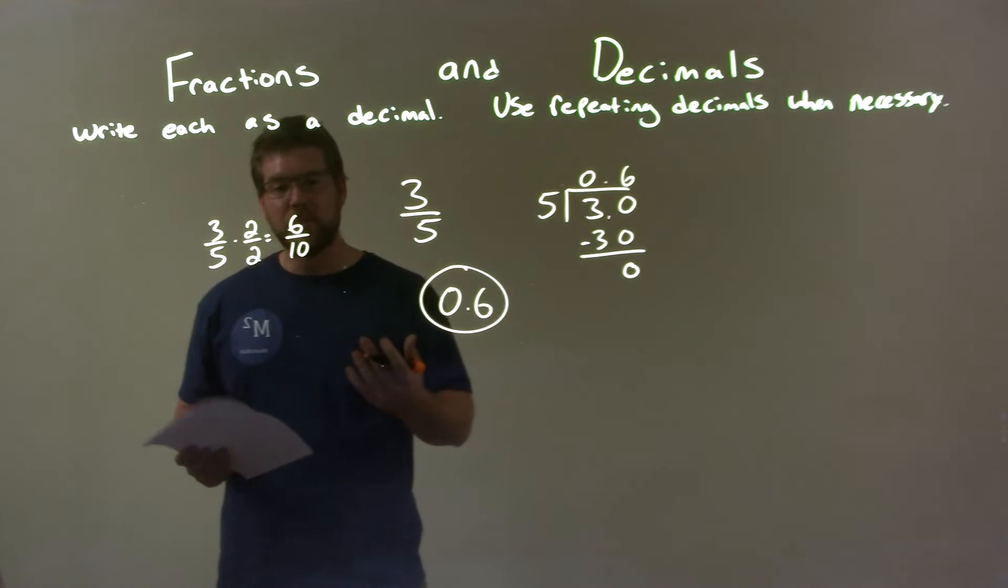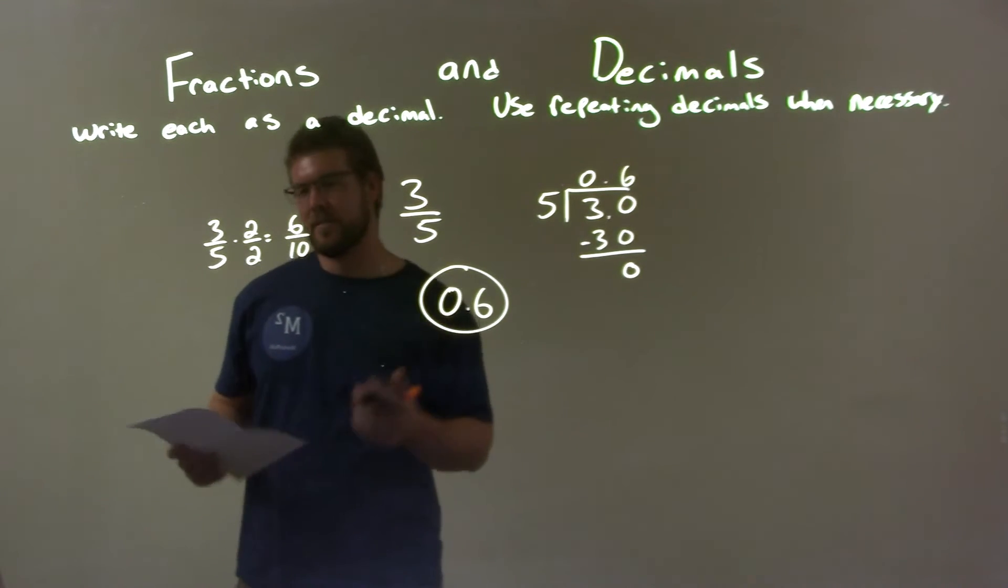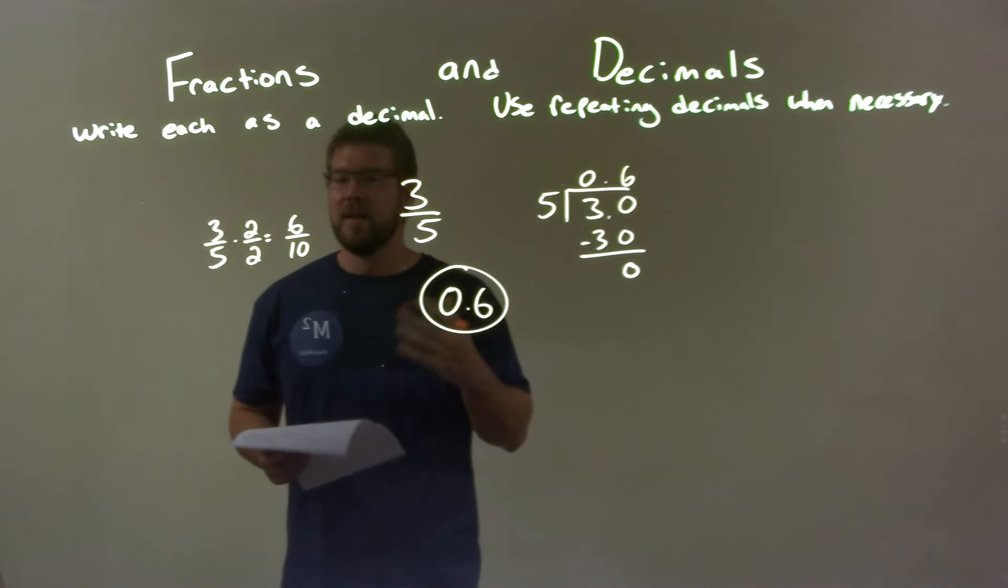And six over ten is the same thing as a decimal, 0.6. Some people like to quickly see it that way. It's up to you.